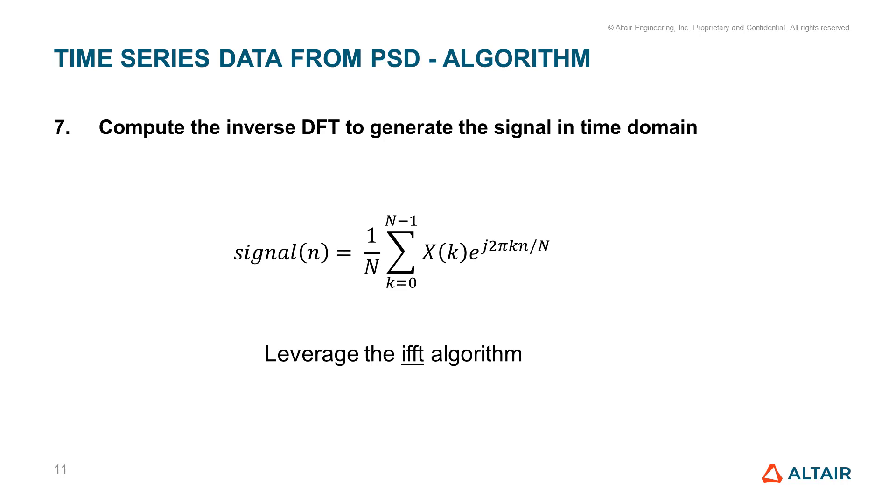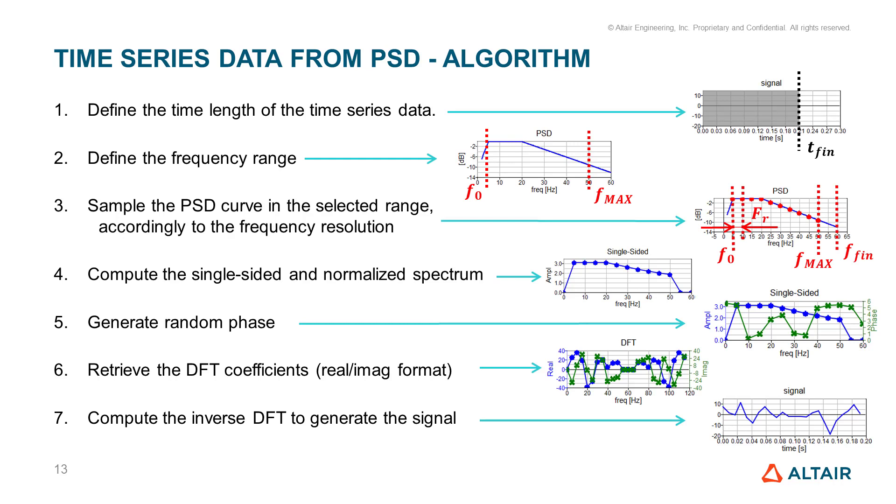The last step is to compute the inverse discrete Fourier transform, which is a linear combination of harmonic waves. We can leverage the inverse fast Fourier transform algorithm. These are all the steps of the algorithm and its implementation in Compose is straightforward.